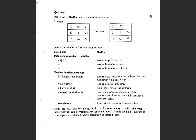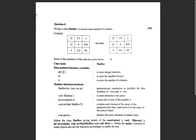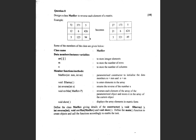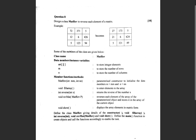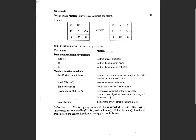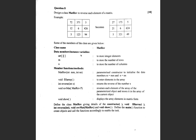Hello guys, welcome to Code with PK. In this video I'm going to solve question 8 of ISC 2009 computer science theory paper. The question says: design a class MatRev to reverse each element of a matrix. So this given matrix becomes 72, 3715 becomes 27 — each element is reversed. Pretty simple.